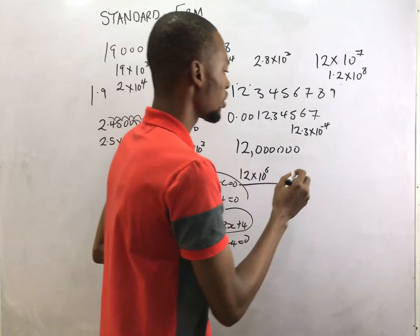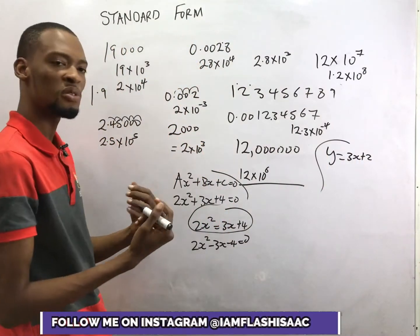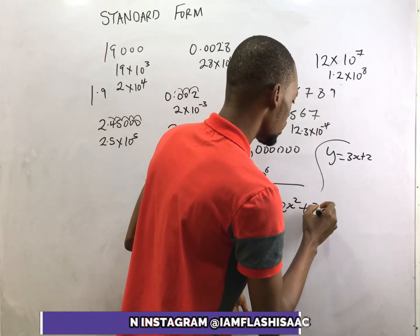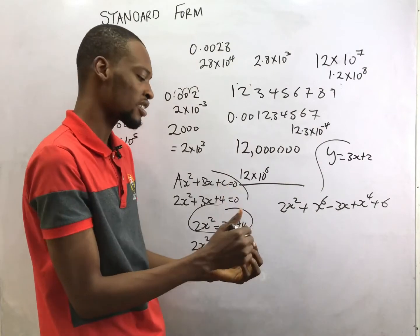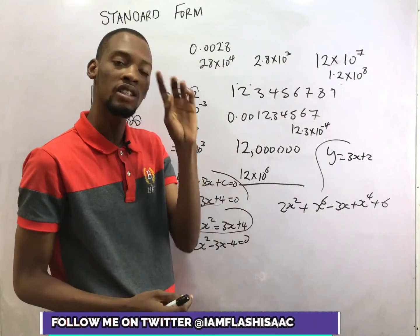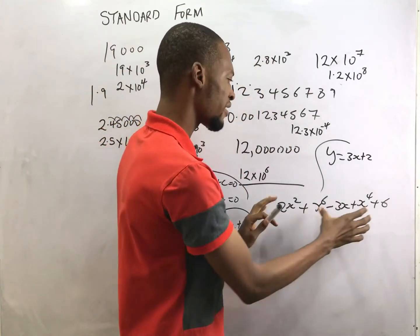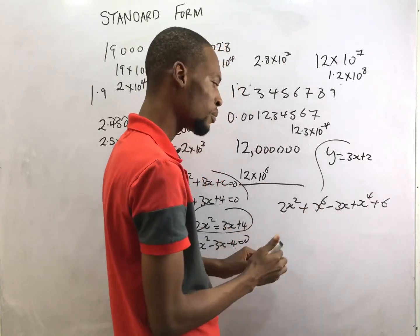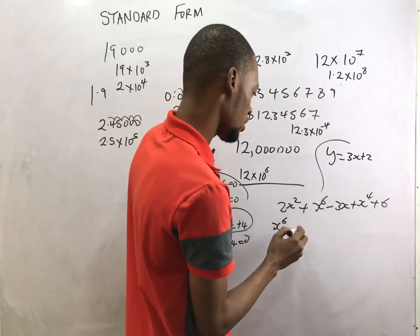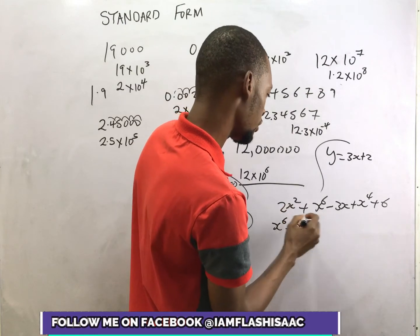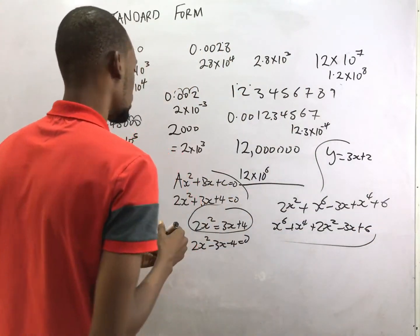For linear equations, the standard form is y = 3s + 2, or generally y = mx + c. For polynomials, we arrange terms according to their descending powers. A linear equation has a highest power of 1, a quadratic has a highest power of 2, and anything with powers higher than 2 is a polynomial. So for a polynomial like 2s² + s⁶ − 3s + s⁴ + 6, the standard form arranges from the highest power first: s⁶ + s⁴ + 2s² − 3s + 6.